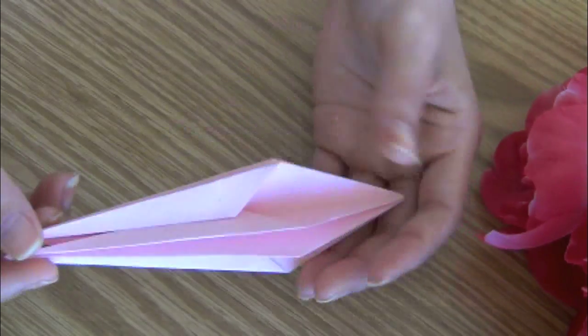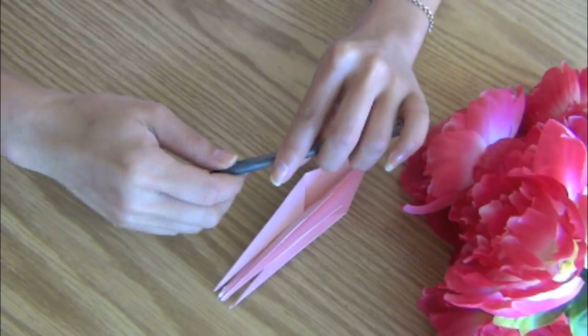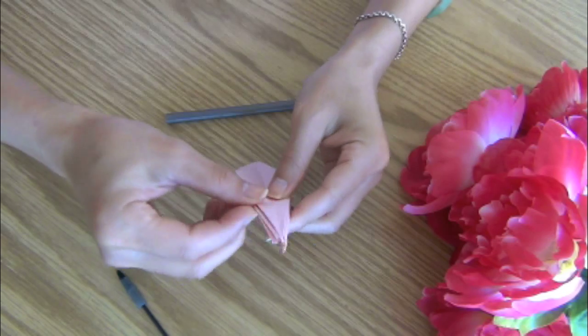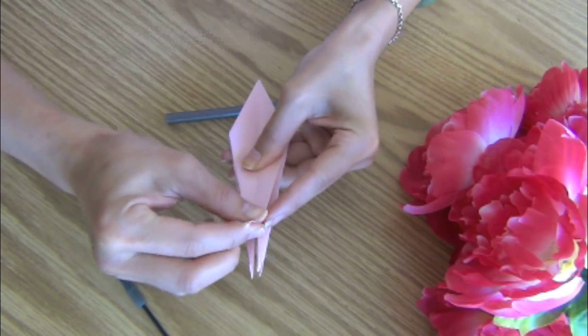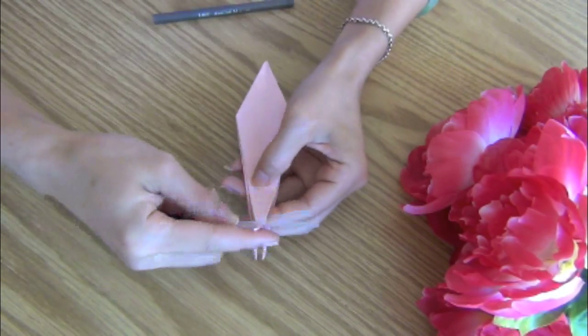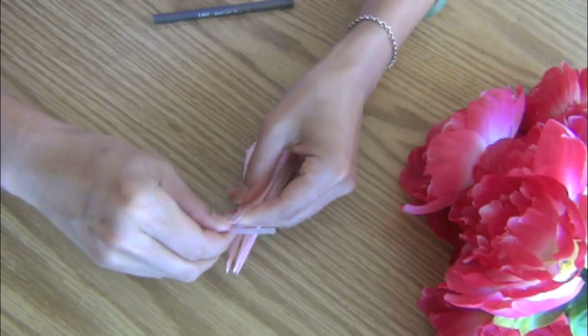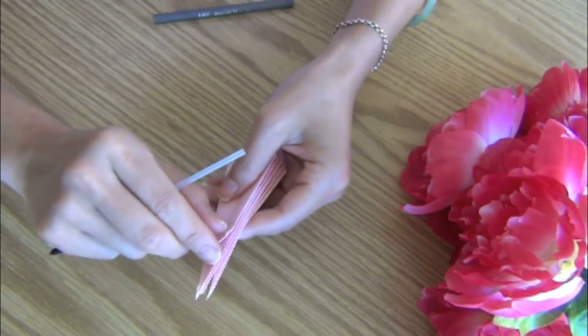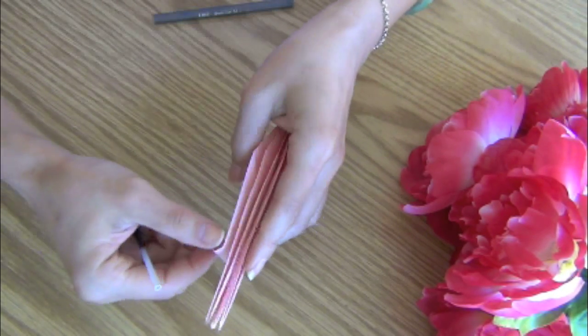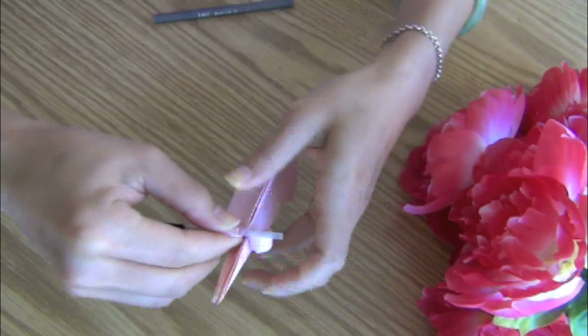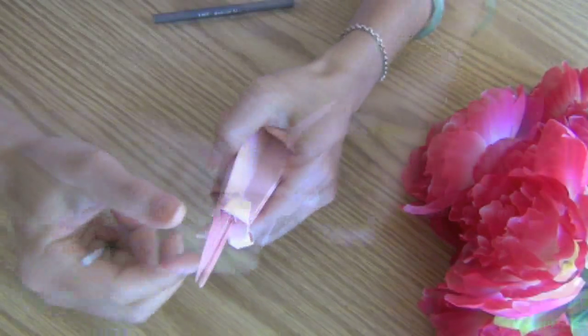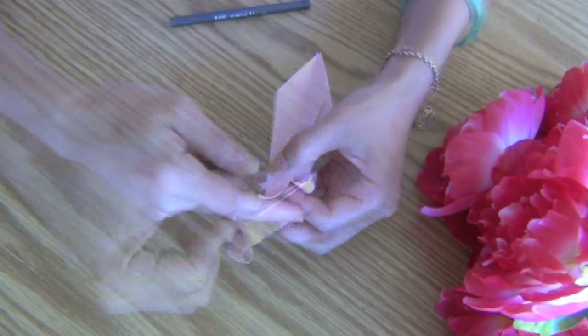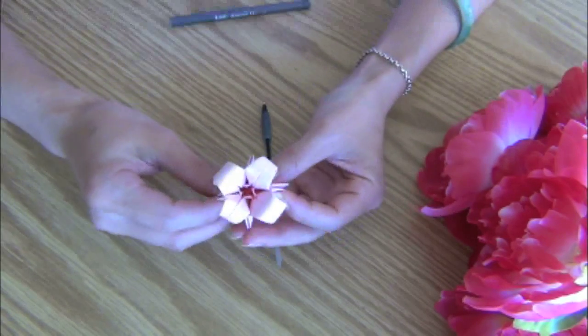When you finish, you should have something that looks like this. Take a very thin object like the center core of a pen or you can use a toothpick and start rolling the petals. I always think rolling the petals is the fun part, so just take your time and start curling it into little flower petals. There's only one tiny step different compared to the original origami lily, but just because of that tiny difference it creates a brand new flower.